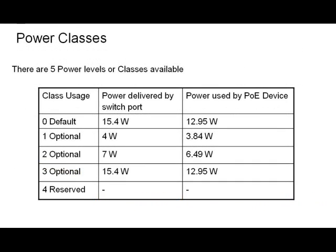When dealing with PoE, there are five power levels or classes available. Most CCTV cameras are Class 2. From a troubleshooting standpoint, this is important: if you are dealing with devices that do not identify themselves to a switch with a proper class, the switch will default them to Class 0. This can cause issues on a switch fully populated with PoE devices. If you have calculated that all devices attached to the switch should receive 7 watts, and in actuality they are receiving 15.4 watts, you will quickly run out of power resources.